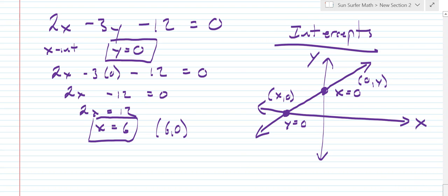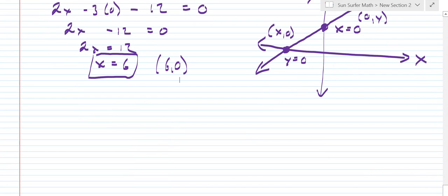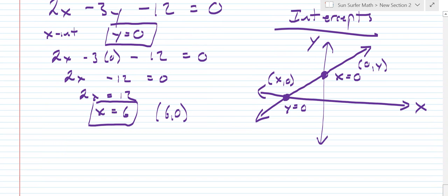Then to find the y intercept, we let x be equal to 0. So let's do that. To find the y intercept, we let x be equal to 0. So we have 2 times 0 minus 3y minus 12 equals 0, or minus 3y equals 12, or y equals negative 4. And that gives us the ordered pair x is 0 and y is negative 4.